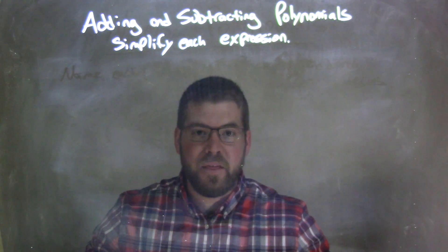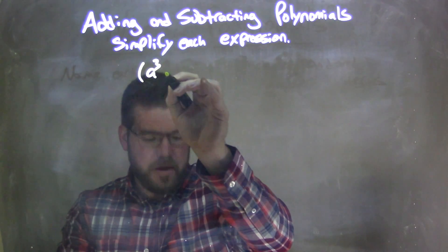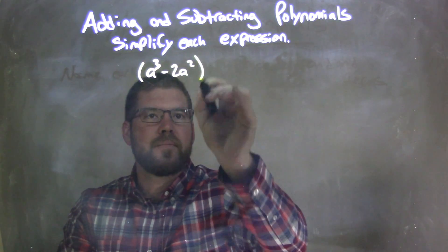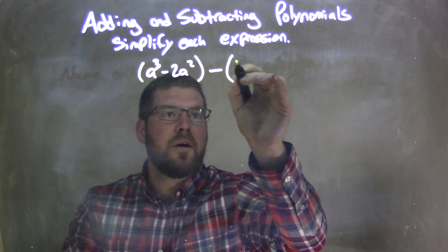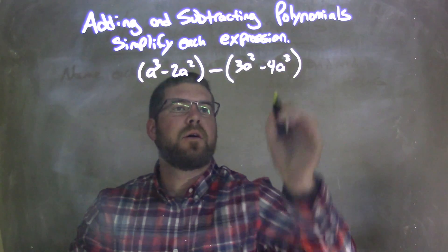So if I was given this polynomial, a to the third parentheses minus 2a squared minus parentheses 3a squared minus 4a to the third. Okay.